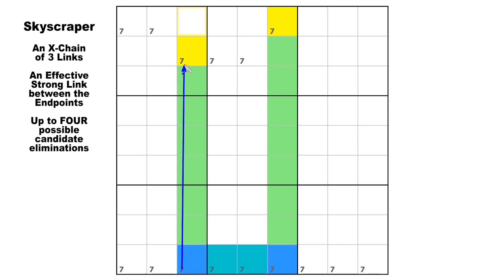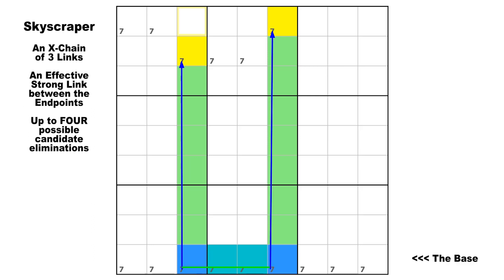The weak link at the bottom is called the base — the foundation of the skyscraper. It is called a skyscraper because, as in this diagram where the two strong links are upright and vertical, they kind of resemble two tall buildings of different heights. I like to call these two uneven conjugate pairs the spires, like in column three and column six. Those are the spires — this is my own term, and I hope you don't mind if I use it to help explain this pattern.